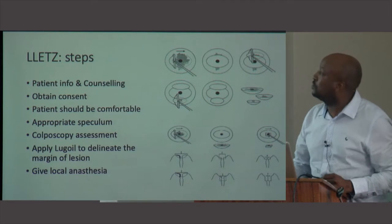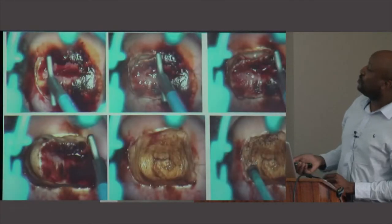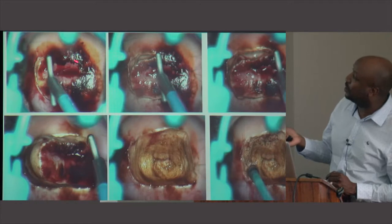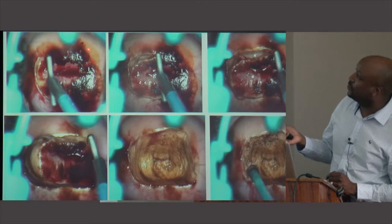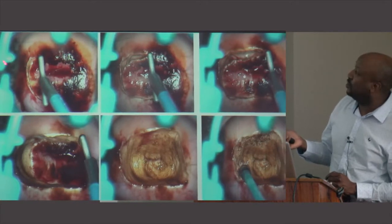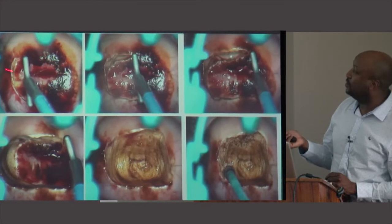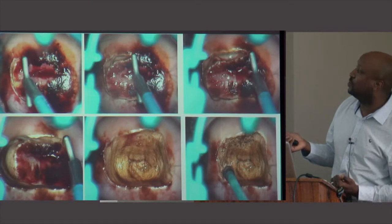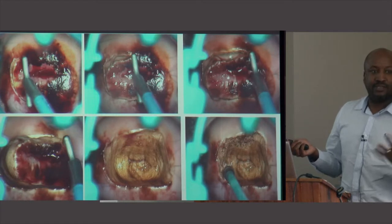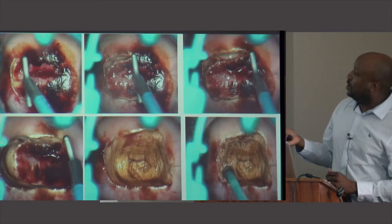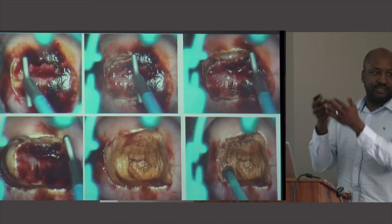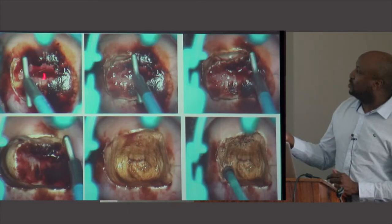Once you've applied Lugol's iodine, you don't want to start where the staining marks the lesion — you want to start at least 2 to 3 millimeters on the normal tissue. The excision should be deep enough, so choose the appropriate size loop. It should go in at least 10 millimeters or even more. The key is not to rush, because the loop will tend to bend if you rush. Give the energy time to work — it's actually very easy.